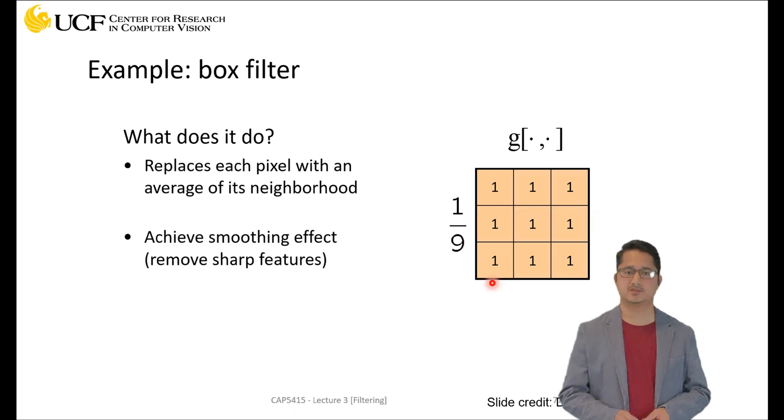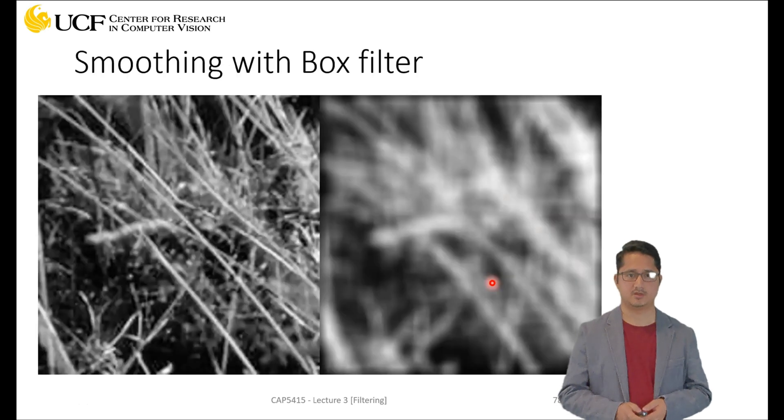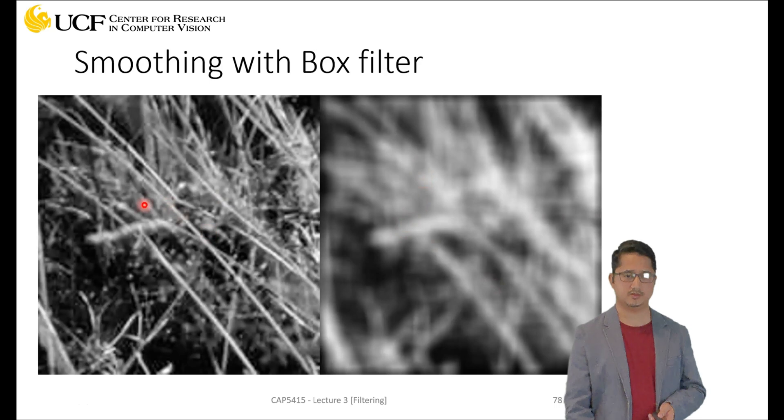What it's doing is smoothing and trying to remove sharp features. For example, if you have edges it will smooth the edges. This is a very extreme case of box filtering - you can see that all these sharp features are completely gone after box filtering.